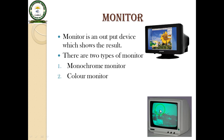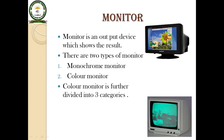The second one is a color monitor. A color monitor is a monitor which shows the output in different or many colors. Color monitor is further divided into three categories: the first one is CRT, the second one is LCD, and the third one is LED.